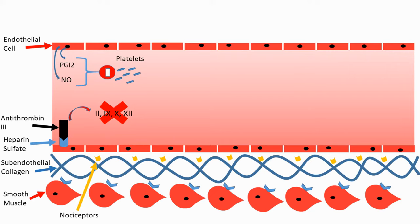One last protein I want to mention is thrombomodulin. This protein binds onto thrombin, also called factor 2, and modulates thrombin's function. We just mentioned that factor 2 is part of the coagulation cascade — so how can it also be responsible for anticoagulation? Once thrombin binds onto thrombomodulin, its function is changed so that instead of acting as a coagulant, it acts as an anticoagulant.